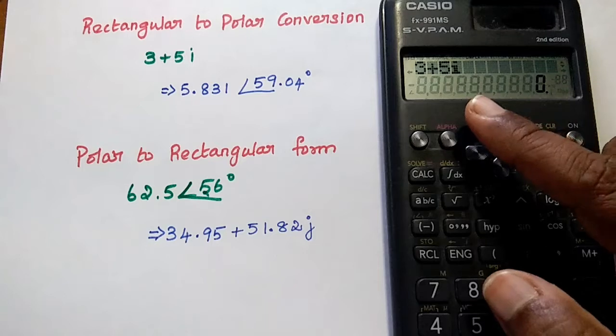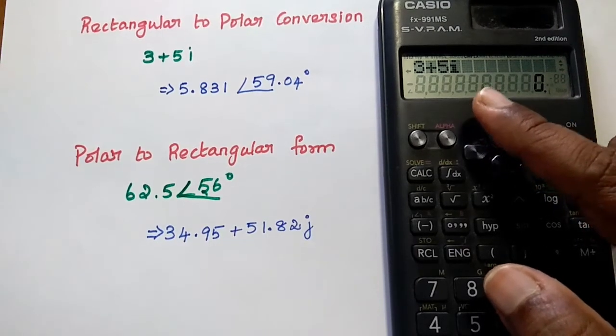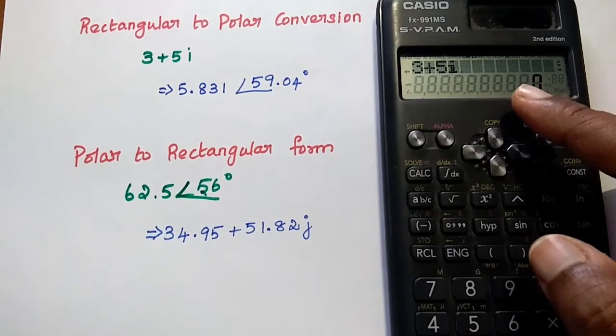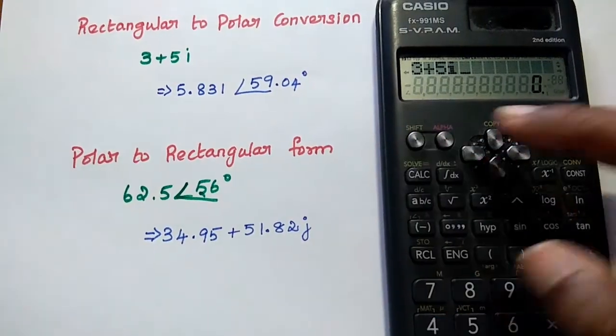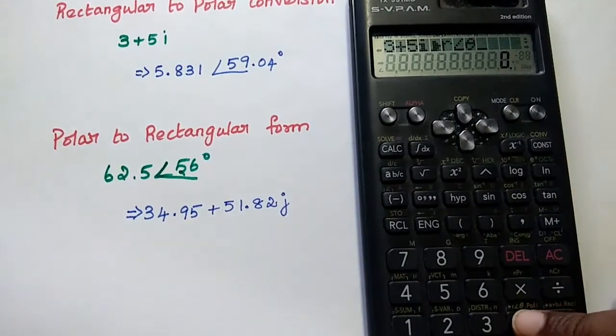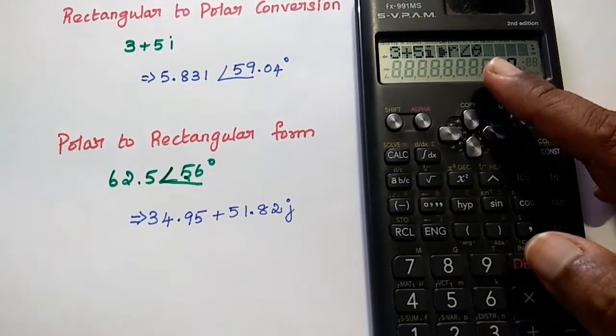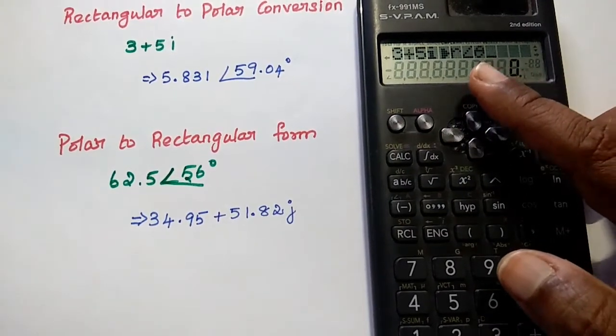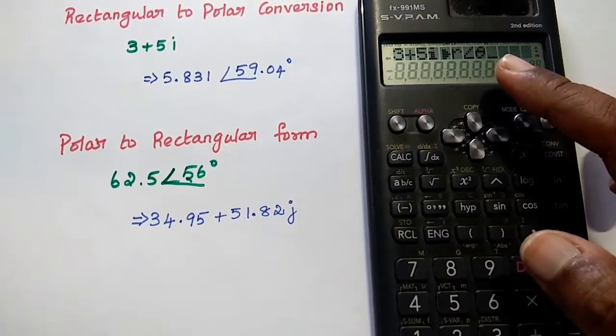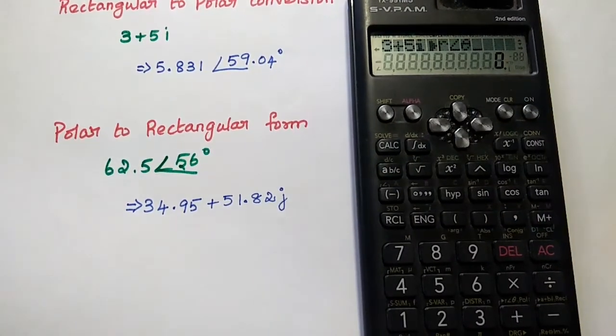Here the rectangular form 3 plus 5i is converted into polar form. For that, you can simply press the SHIFT and plus sign. SHIFT plus means it represents the polar form R with an angle theta. Then you can press equal to sign.